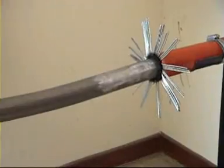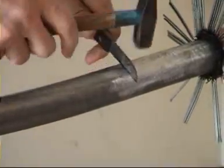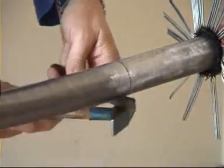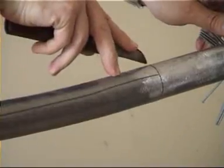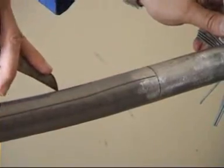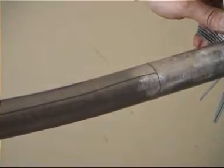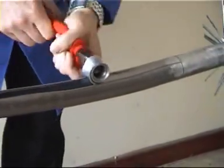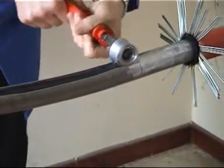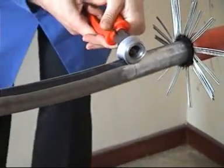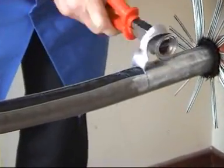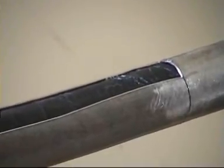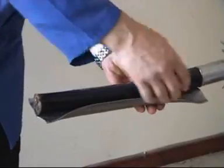Mark the lead sheath cut and with a sharp knife make a circumferential cut on the lead. Score the lead longitudinally and peel off a strip of lead as shown.